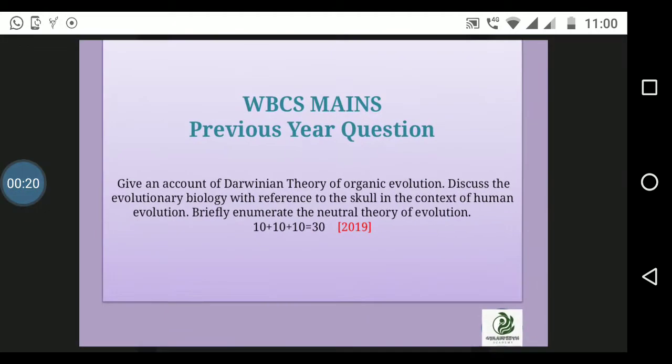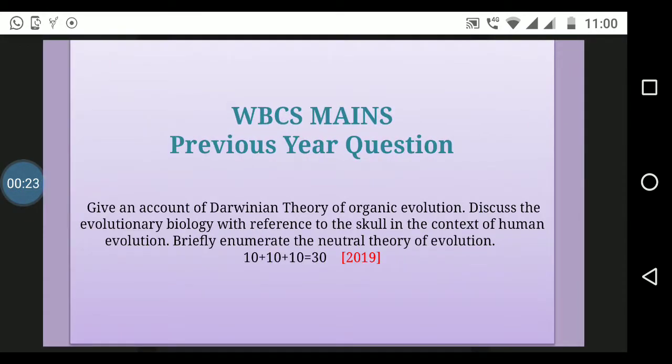First, we will discuss the question from this particular unit on evolution. The question asks: Give an account of Darwinian theory of organic evolution. Discuss the evolutionary biology with reference to the skull in the context of human evolution. Briefly enumerate the neutral theory of evolution. There are three questions: 10 plus 10 plus 10. This was the question from 2019.